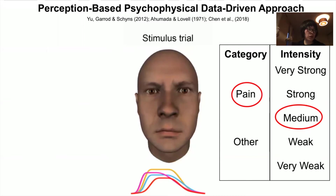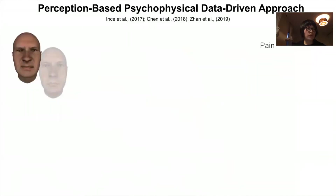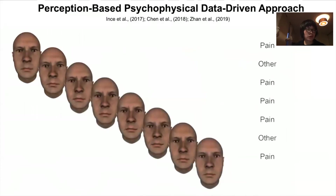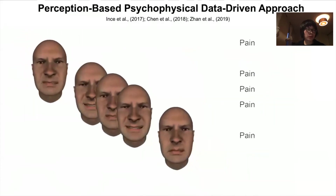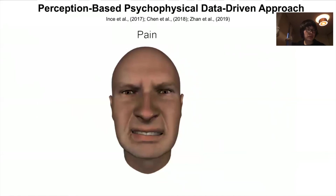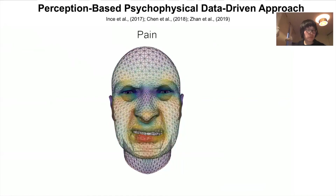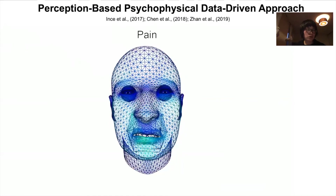40 participants in each of the two cultures each completed 3,600 such trials. We then measure the statistical relationship between the facial movements presented on each trial and the participant's responses to produce a statistically robust dynamic facial expression model for each individual participant, as shown here.